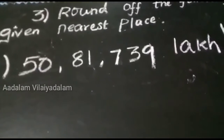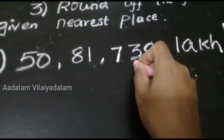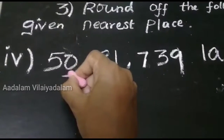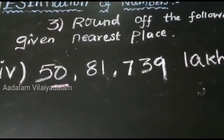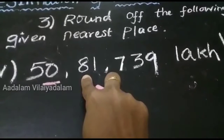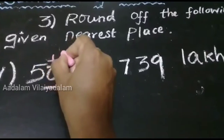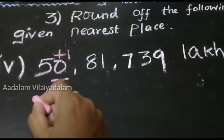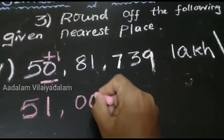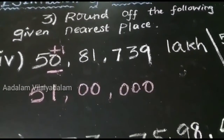Fourth one: round off to the nearest lakhs digit. First, you identify the lakhs place: 1, 10, 100, 1000, 10,000, lakhs. This is the lakhs place. Next, consider the second digit, which is 8. Since 8 is greater than 5, just add one number to the corresponding digit. 1 plus 1 equals 2, so the lakhs digit becomes 51. Remaining digits, we put 0. This is the round off to the nearest lakhs place.